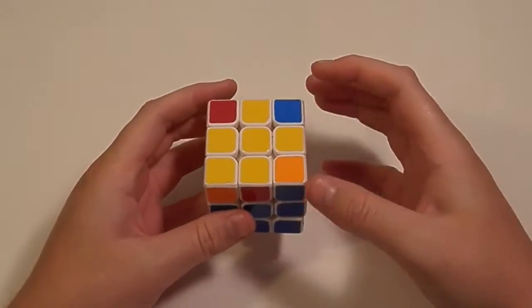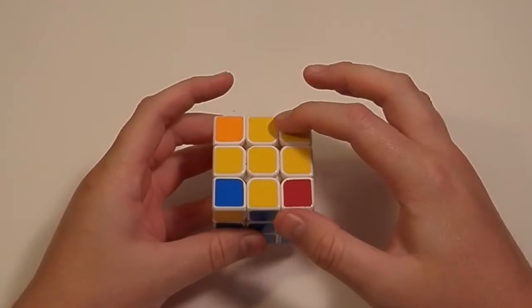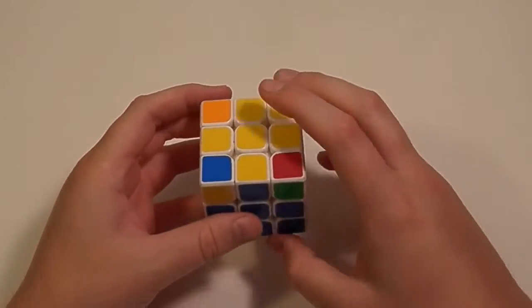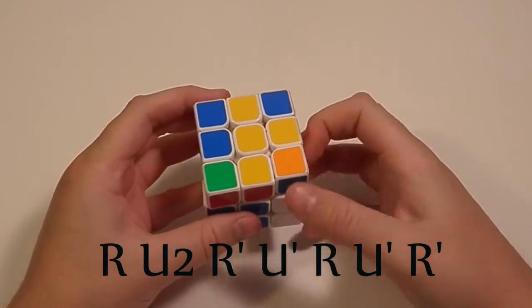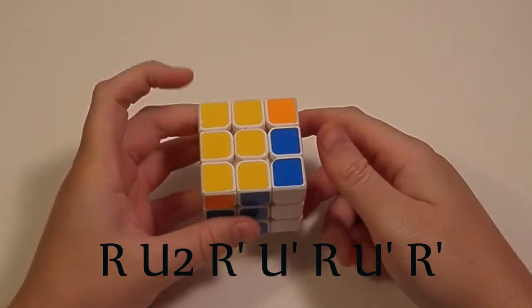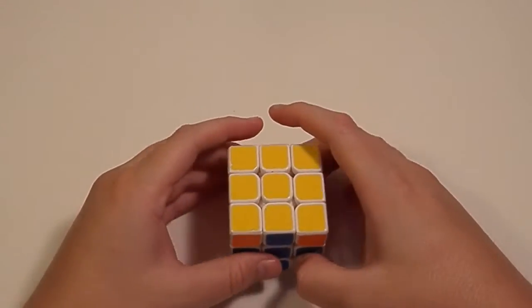The other one is, if you notice that it's an Anti-Sune but your corner is over here, it's not over here, what you can do is R U2 R' U' R U' R' and that will orient your layer for you. Now let's look into execution.